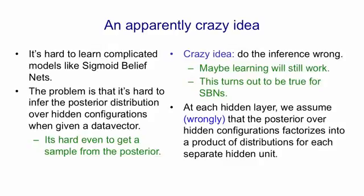So the distribution that we're going to use is a distribution that ignores explaining away. We're going to assume wrongly that the posterior over hidden configurations factorizes into a product of distributions for each separate hidden unit. In other words, we're going to assume that given the data, the units in each hidden layer are independent of one another, as they are in a restricted Boltzmann machine. But in a restricted Boltzmann machine, this is correct, whereas in a sigmoid belief net, it's wrong.